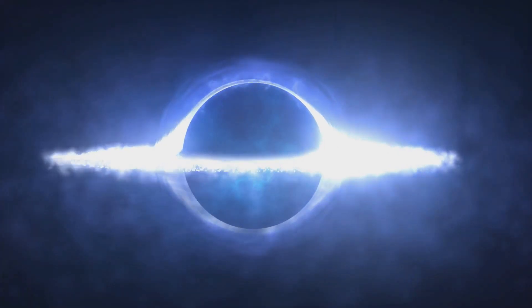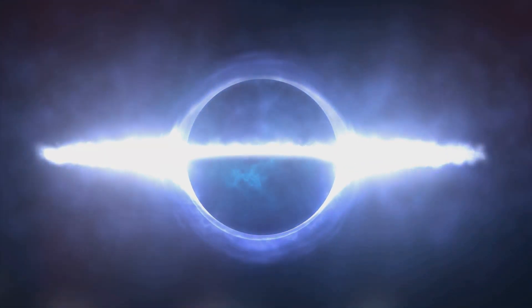Think of it like placing a bowling ball on a trampoline. It causes the trampoline to sag. A black hole creates a gravitational well so deep that nothing, not even light, can escape its pull. That's why we call them black holes. They're invisible to our telescopes.